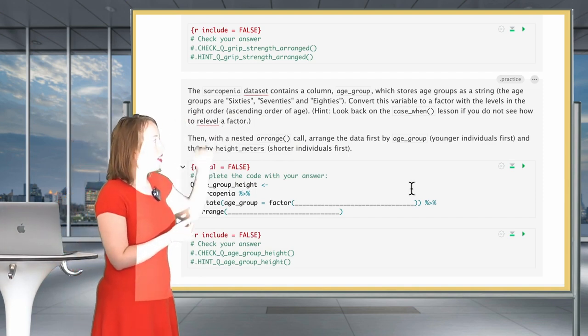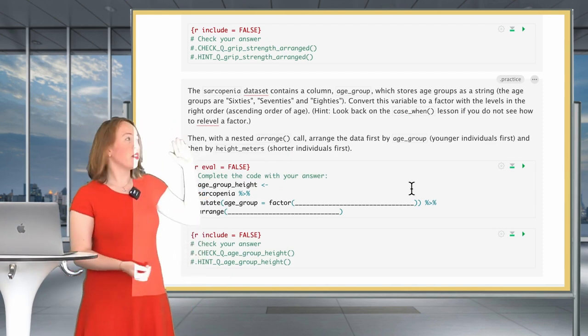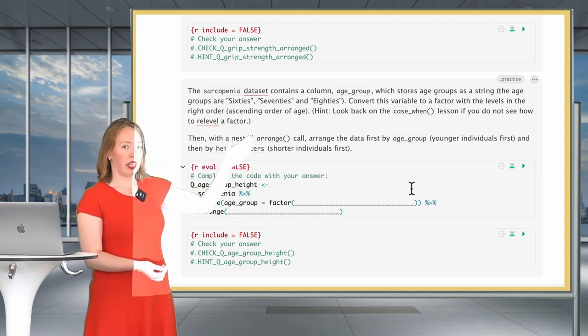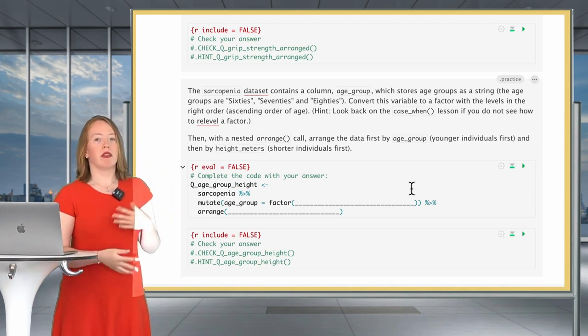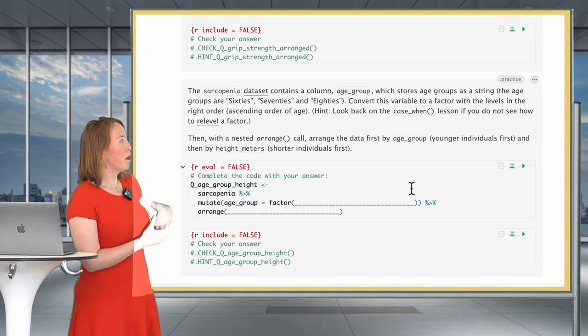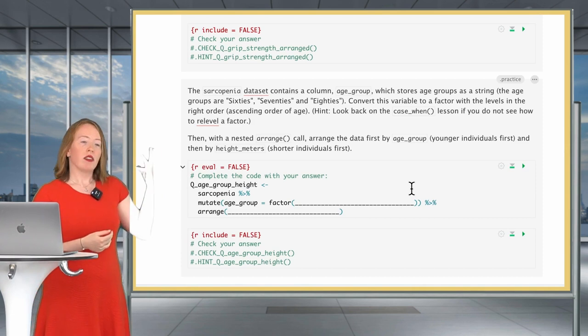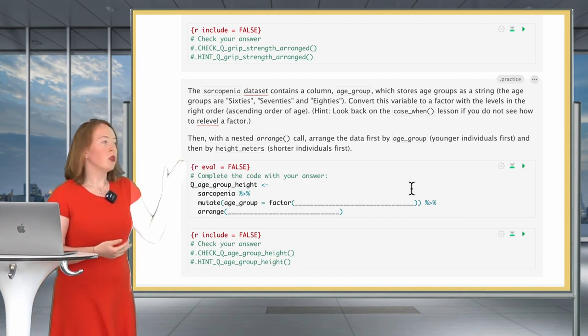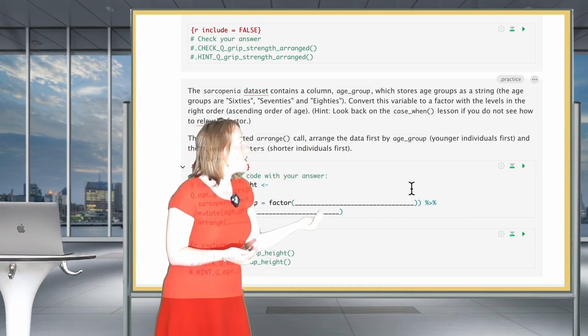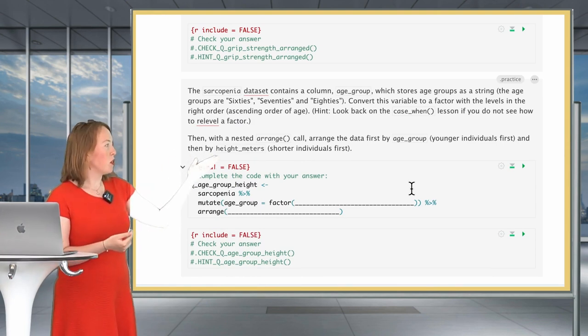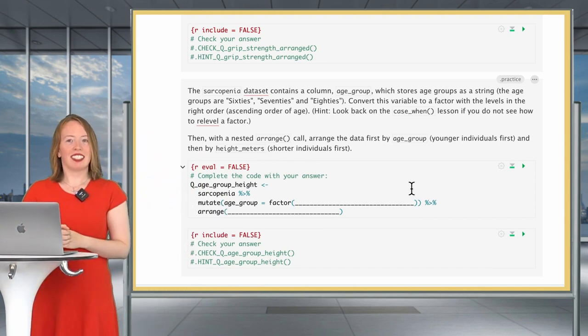Now it's your turn to have a go at this arranging call. You will be using the sarcopenia data set and you will first arrange by sex and then by grip strength. The second question will be to use the sarcopenia data set and its age_group variable which stores the age as strings. So it's either sixties, seventies, eighties. You're going to convert this variable as a factor with the levels in the right order. So ascending order of age. If you have a doubt about how to re-level or define the levels of a factor, I invite you to look back on the case one lesson. And then I ask you with a nested arrange to arrange first by age group, so younger individuals first, and then by height in meters, so shorter individuals first.